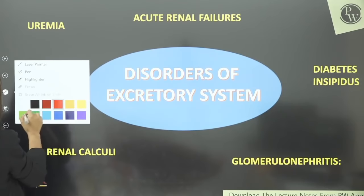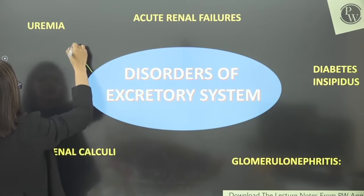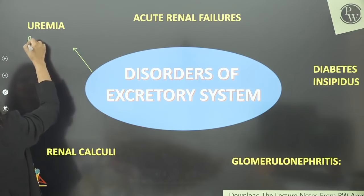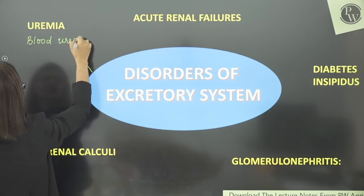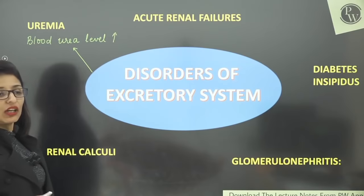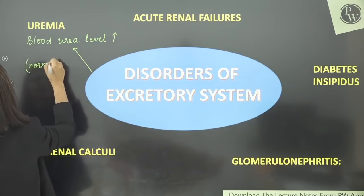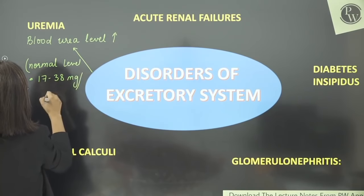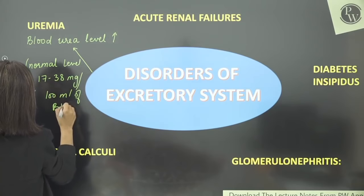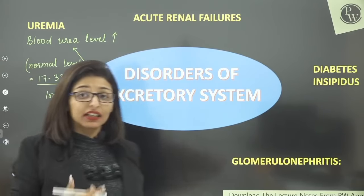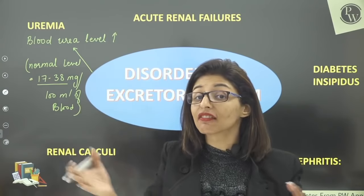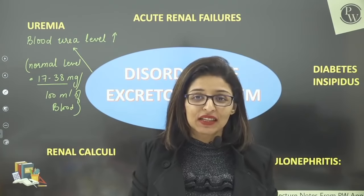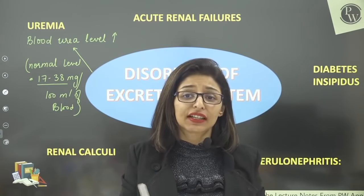The first disorder is uremia. These are terms you will see in your NCRT. Uremia means an increase in urea levels in the blood — blood urea level increases beyond normal. The normal urea level in blood is 17 to 38 mg per 100 ml of blood. If it crosses 38, it means urea level is accumulating in the blood — that is known as uremia. When does it happen? When the kidney is heading towards failure — if the kidney is not functioning properly, urea and many other waste products are not being filtered from the blood.